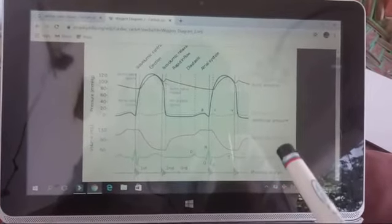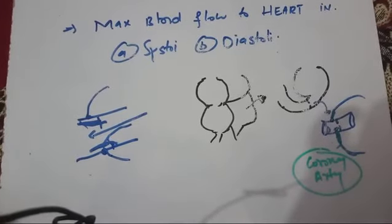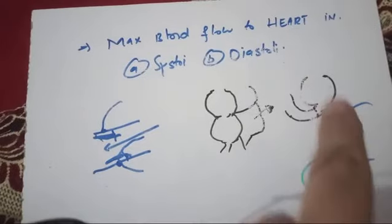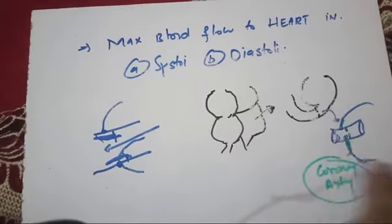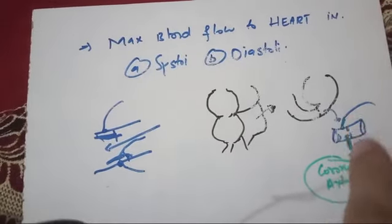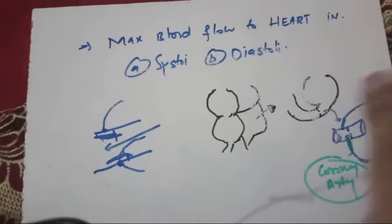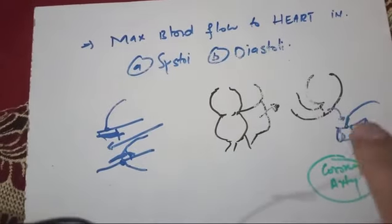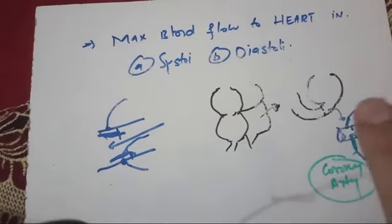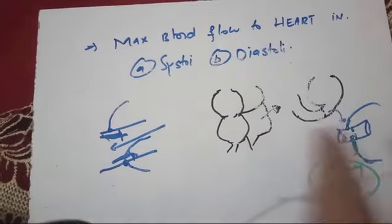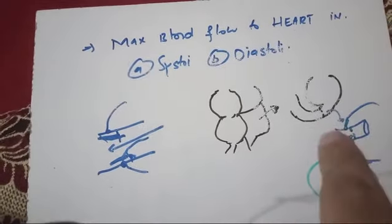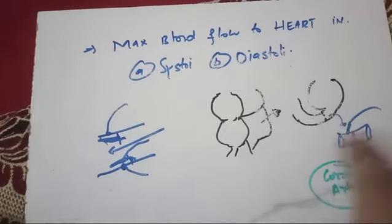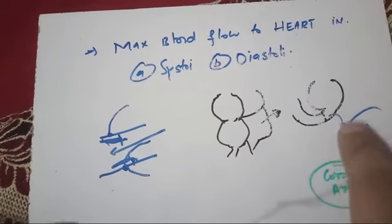A key MCQ: maximum blood flow to the heart — during systole or diastole? The coronary arteries originate after the aortic valve. During systole, when the heart contracts, the valve opens and the cusps block the coronary foramina, preventing blood from reaching the coronary arteries. There is least blood flow to the coronary arteries during systole. During diastole, the valve cusps open the foramina, allowing blood to flow to the coronary arteries — so coronary flow is mainly during diastole.